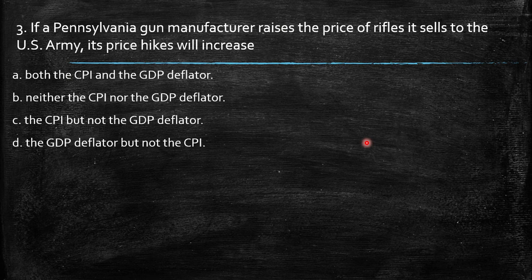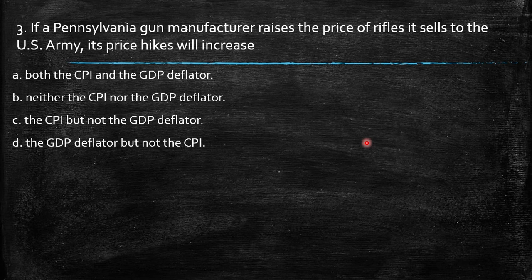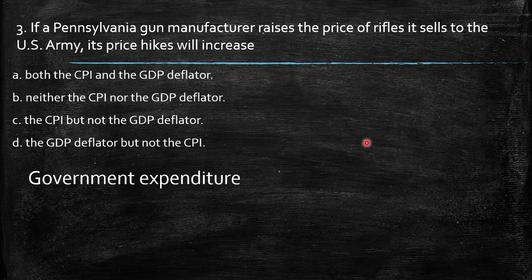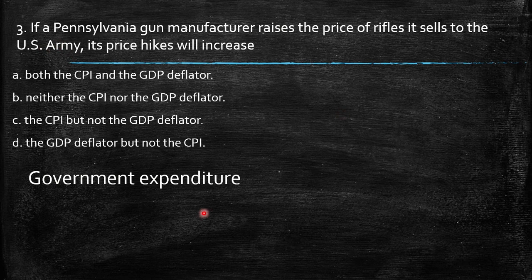So first, when we are talking about guns that are going to be sold to the U.S. Army, we're talking about government expenditure. So then naturally it goes directly to the GDP.